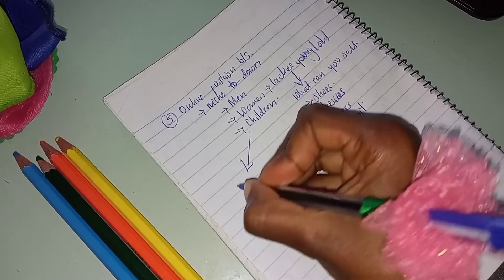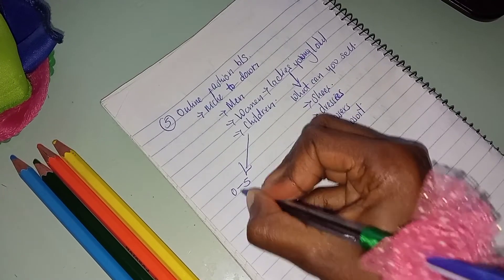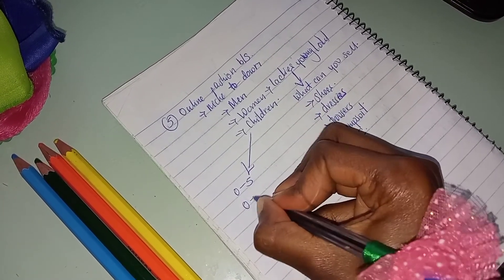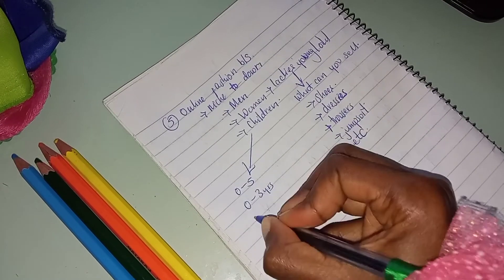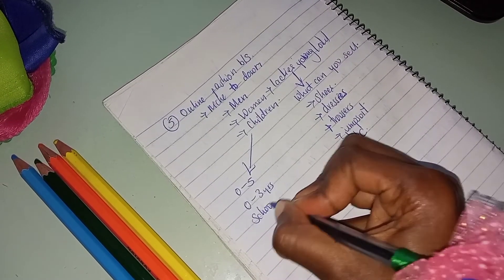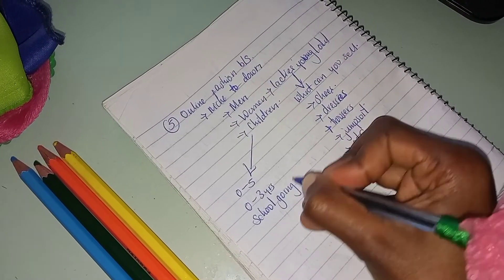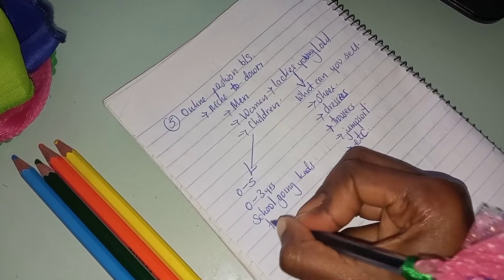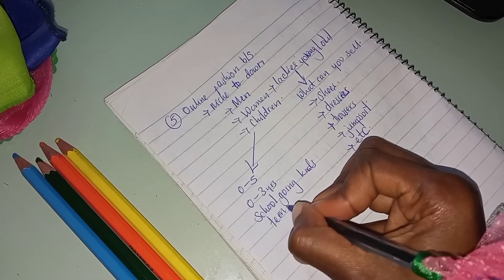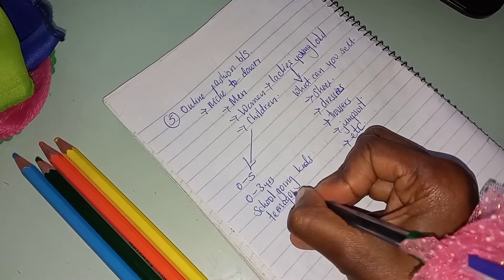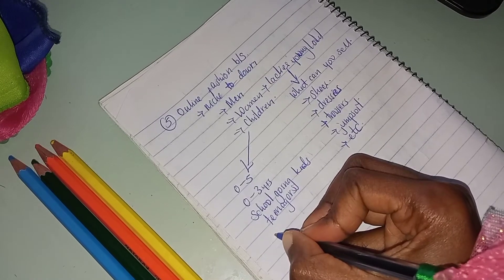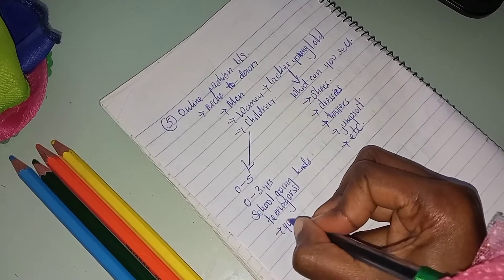For children, a child is between the age of zero to 18 years but you're going to categorize this according to what you're going to sell. So we can have zero to five years or zero to three years. Then there are the school-going children who start at the age between three or five years to around 12 or 13 years when they finish their primary season. Then there are those who are in high school whom we call the young adults.